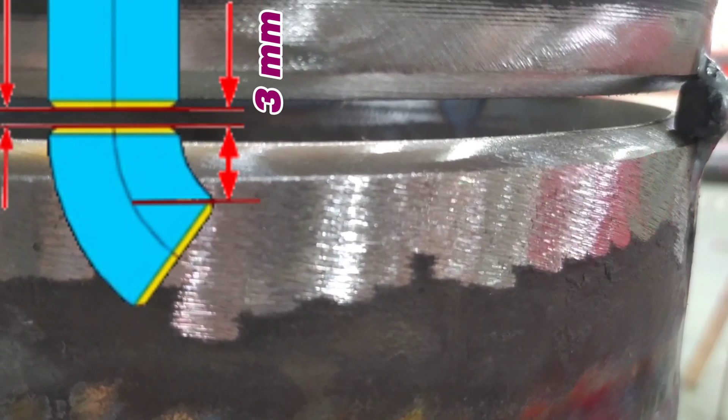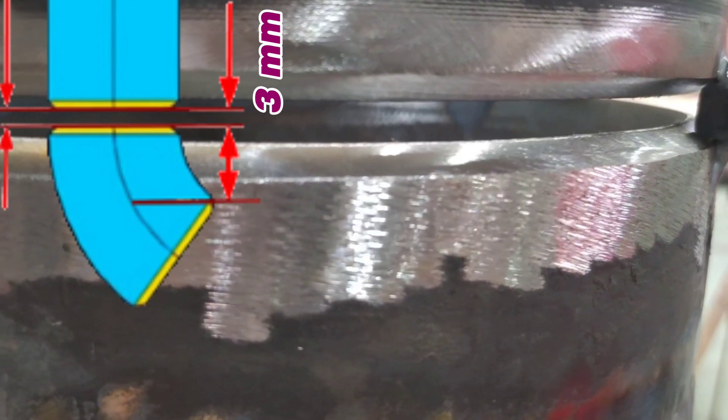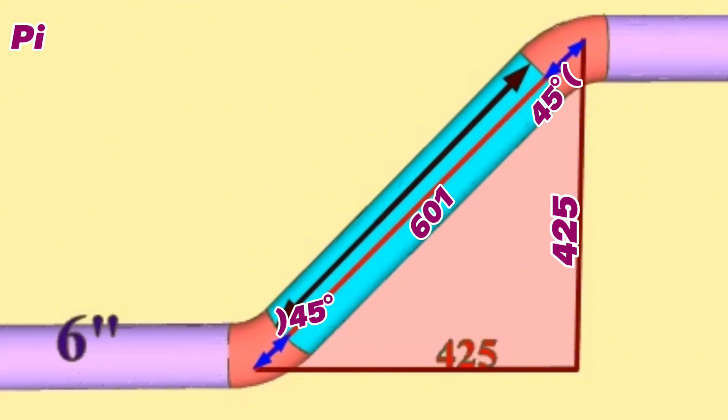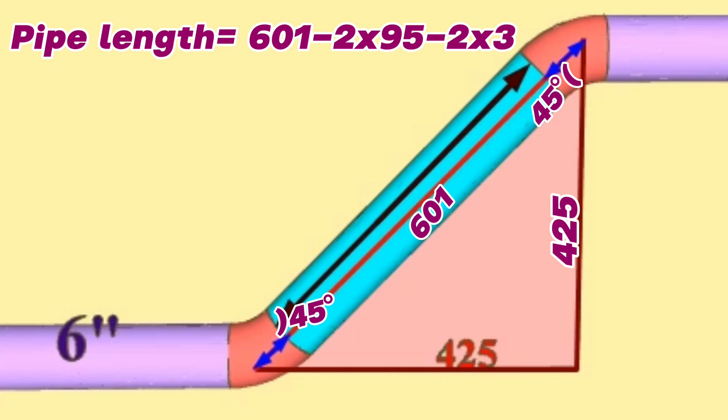Let's start to calculate this blue color pipe section length. Pipe length equals total length 601 millimeters minus 2 times the 6 inch 45-degree butt weld elbow dimension 95 millimeters, and minus 2 times gaps for welding 3 millimeters.